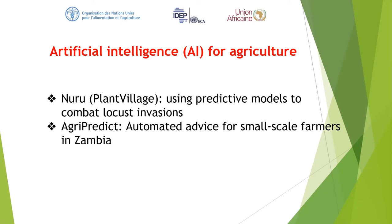Moving on to artificial intelligence for agriculture: one example is Nuru from PlantVillage, which uses predictive models to combat locust invasion. Another project is AgriPredict in Zambia, which uses automated advice for small-scale farmers. Please take time to read about these examples. If you have other examples of AI for agriculture from your countries or projects you've participated in, kindly share them in the discussion on the online platform.